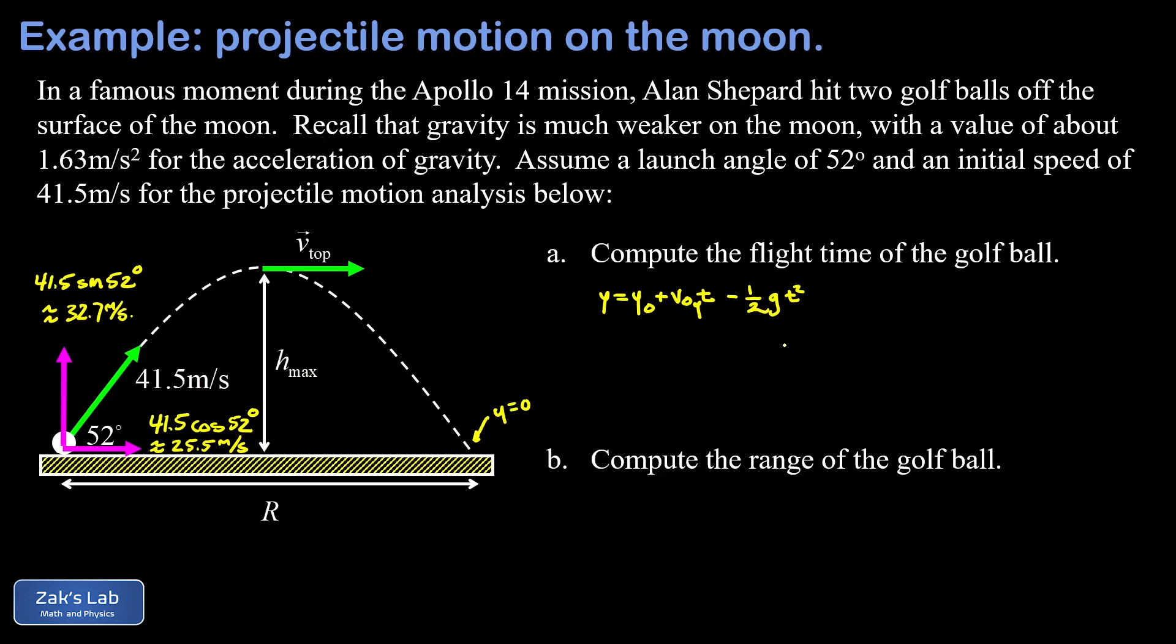Remember, we're going to put in g for the moon, not for the earth. So we start subbing things in. The final y value for the entire flight is zero. We know the initial y value is zero. In other words, we're implicitly putting the origin at the ground level. Now we sub in the initial y velocity that was 32.7. So we have 32.7t minus one half g, which for this problem is 1.63 meters per second squared times t squared.